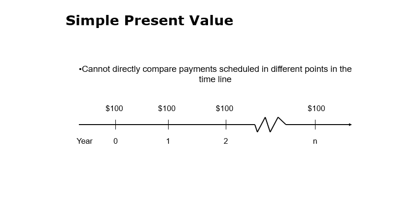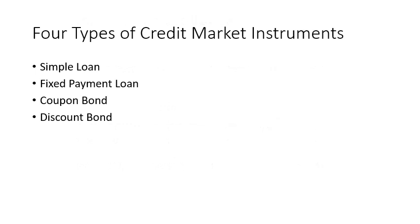For example, if you start today at year zero with $100, and you have the same amount but receive it after one year, two years, or n years — the present values are not equal. At time zero it is exactly the present value, but after one year we divide by the discount (1 plus i); for two years the power is 2; for n years the power is n. In all of these cases, the present value will be decreasing.